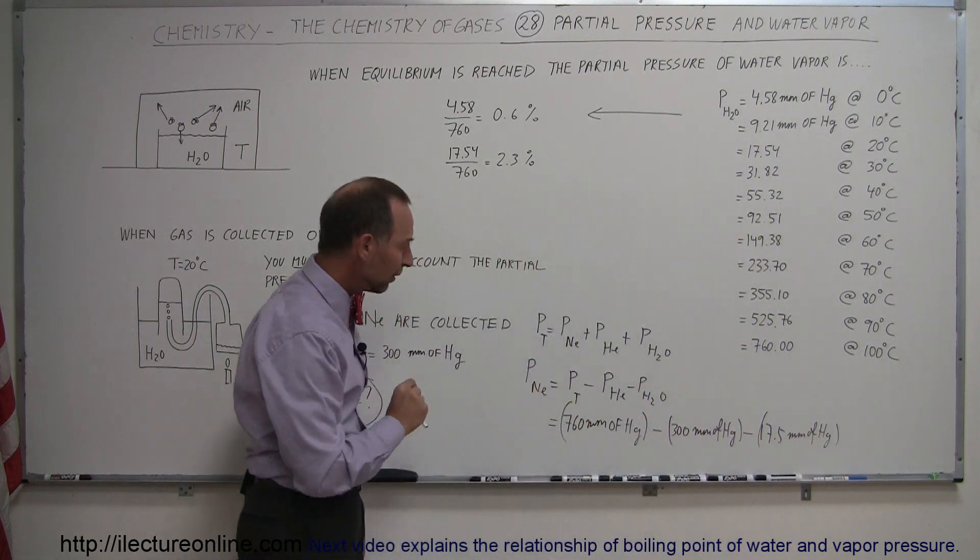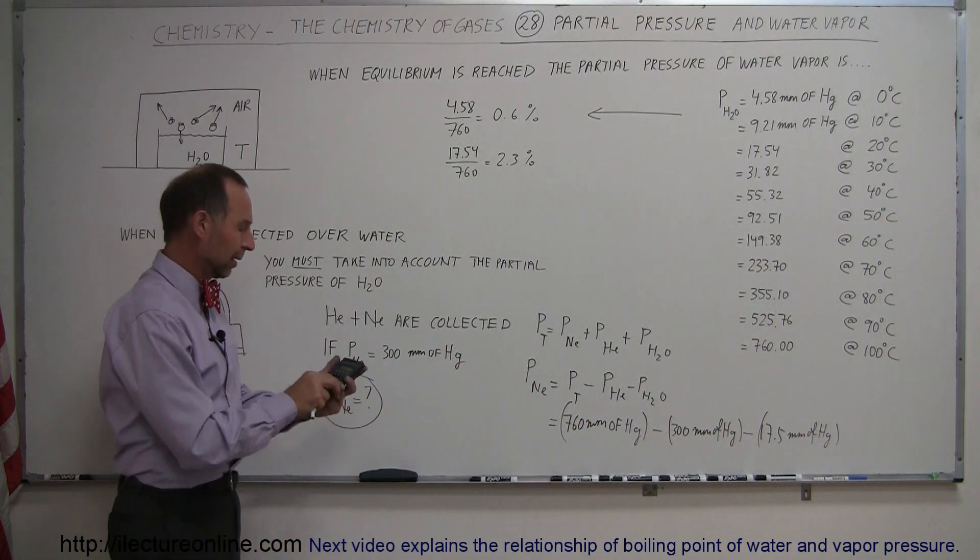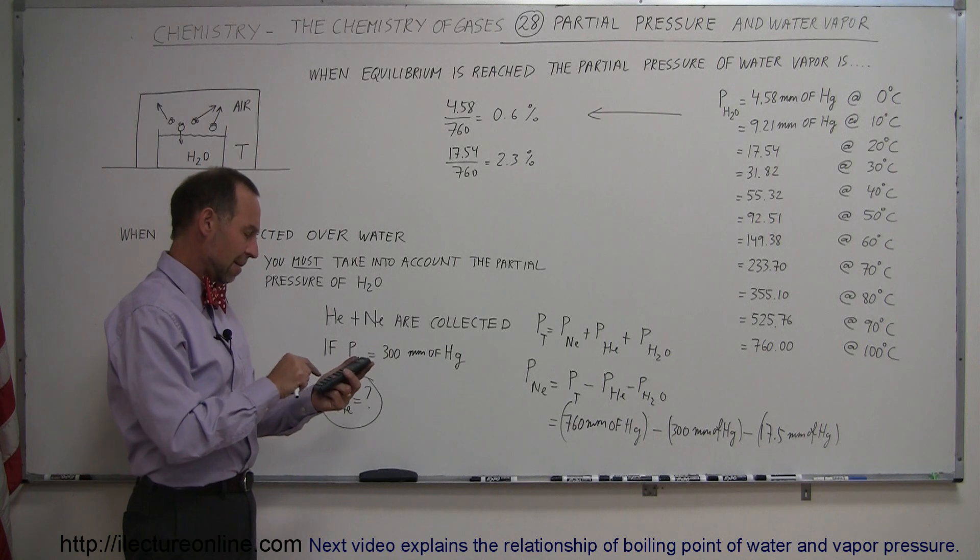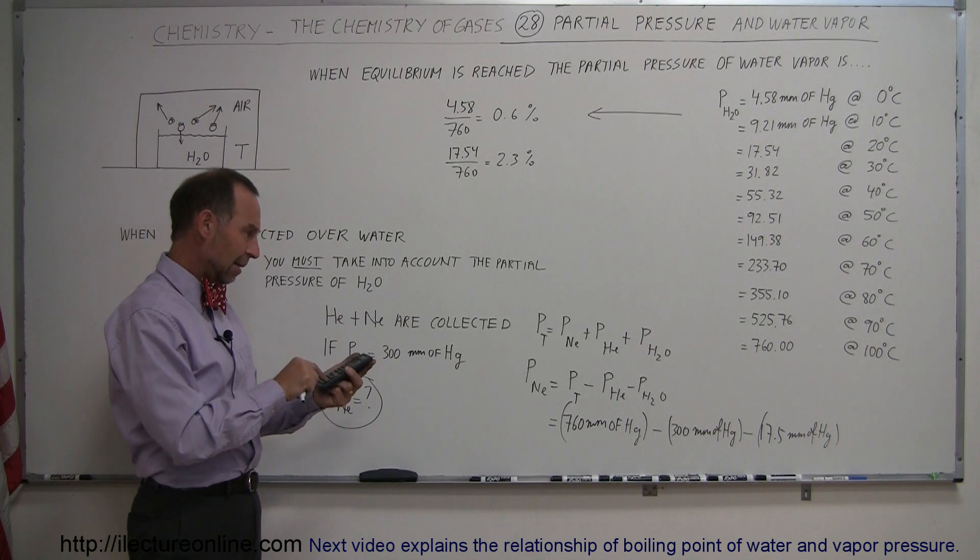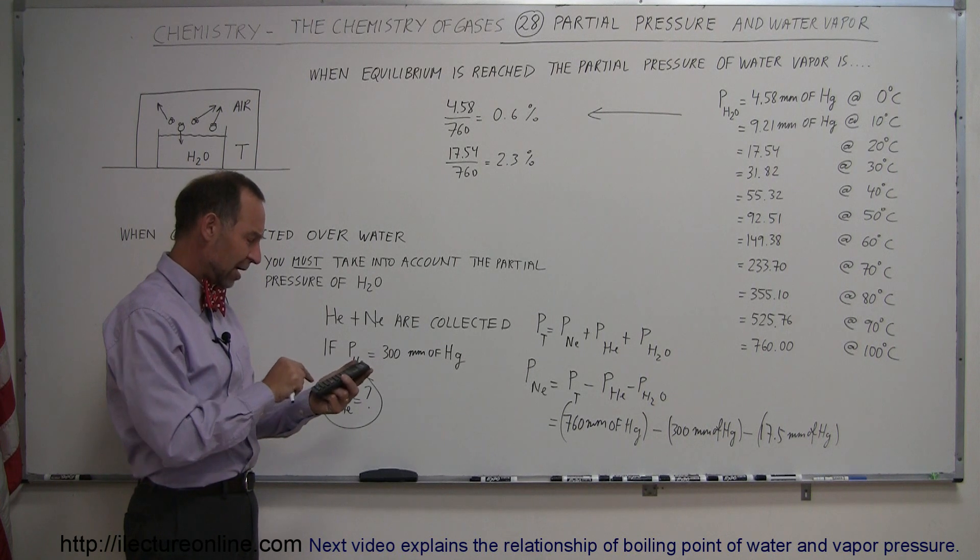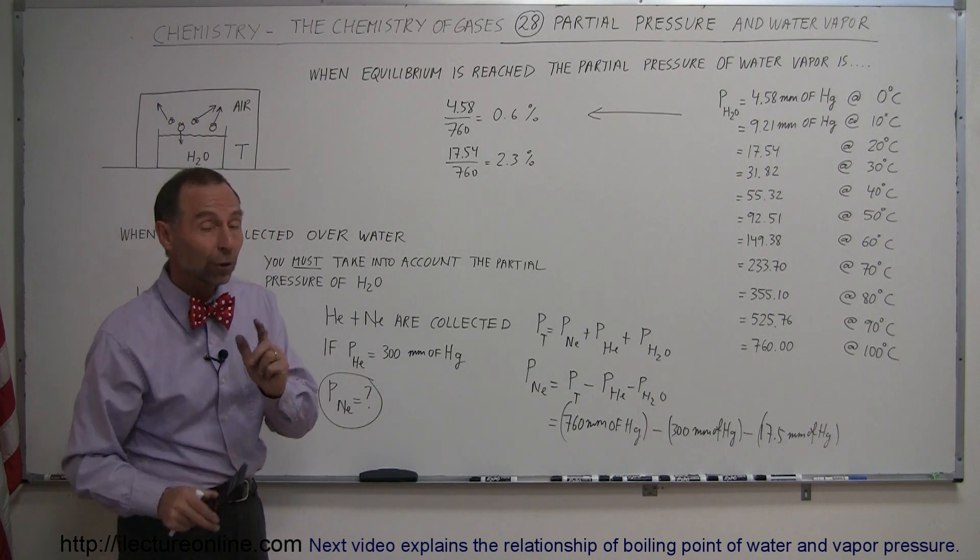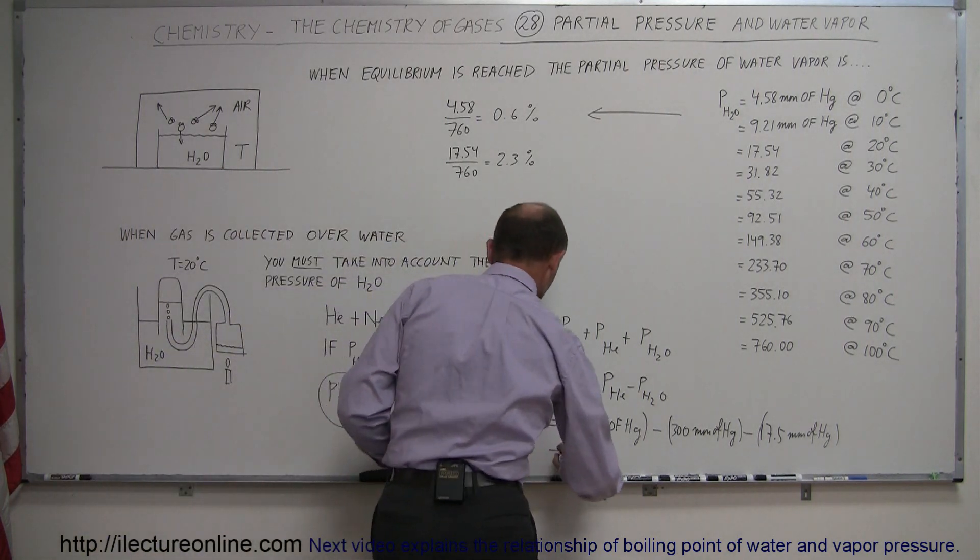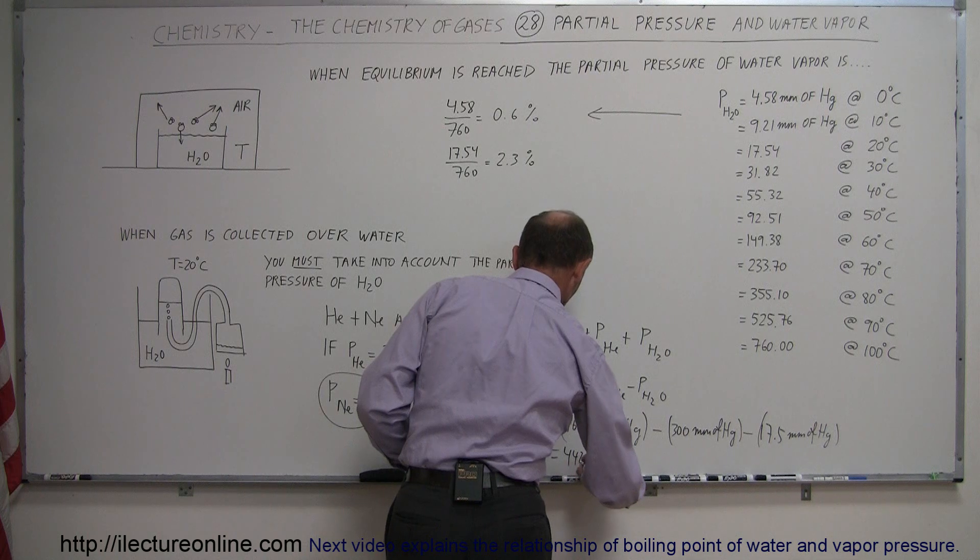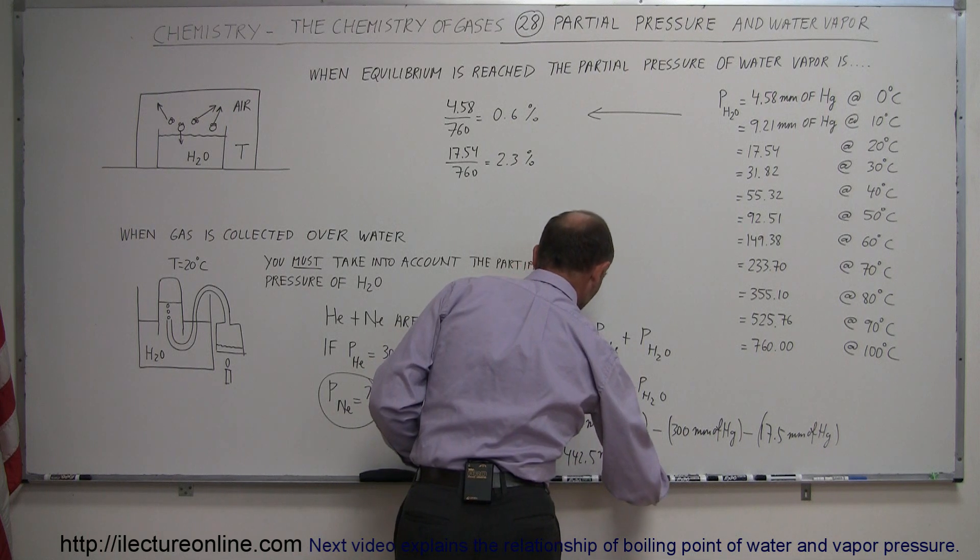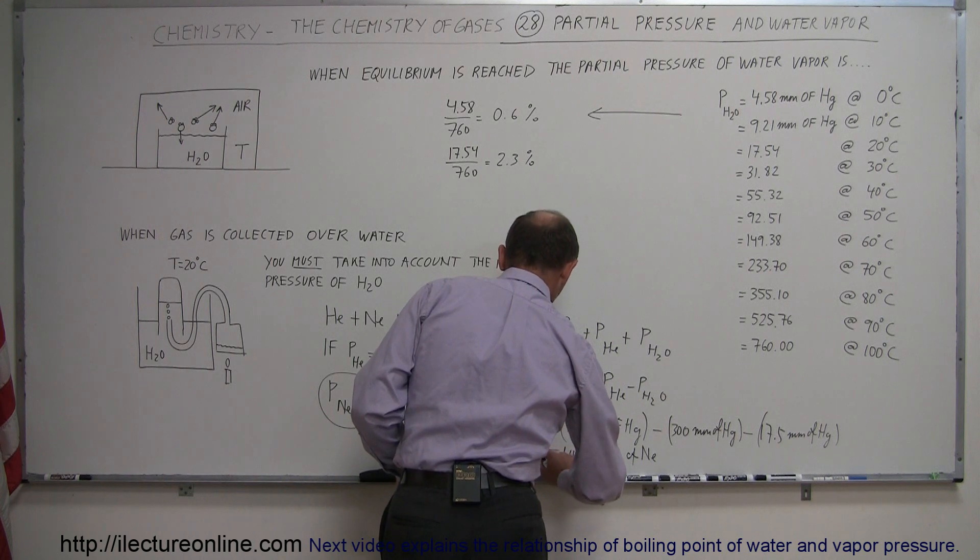So if we subtract all of that from 760, what do we get? So we get 760 minus 300 and minus 17.5, we end up with 442.5 millimeters. That's equal to 442.5 millimeters of mercury of neon gas. So that's the partial pressure of neon.